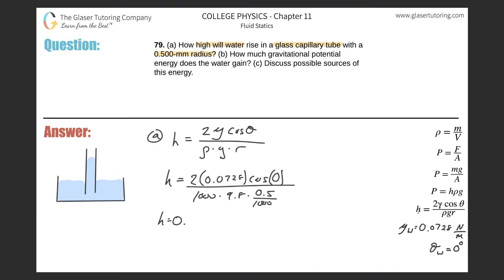That gives a value of 0.0297 meters. If you want to convert to centimeters or millimeters feel free — the problem doesn't ask for a specific unit, so this is a valid answer. Now let's look at part B: how much gravitational potential energy does the water gain?